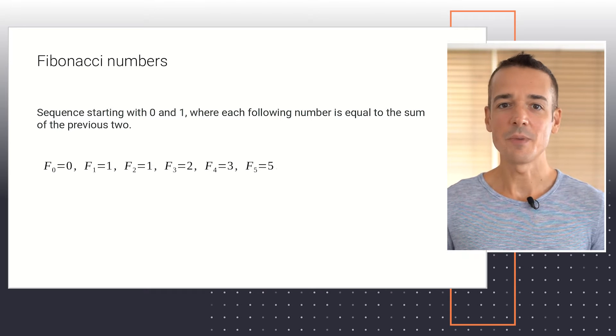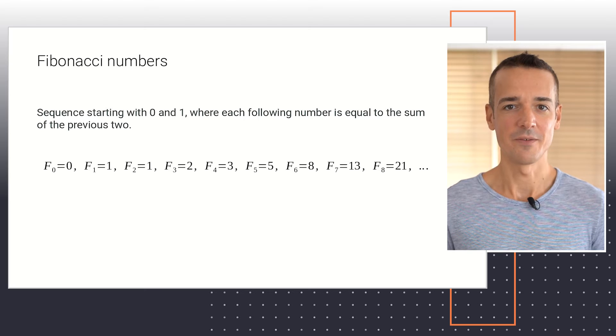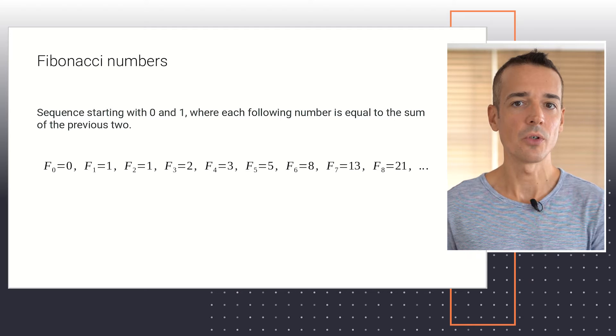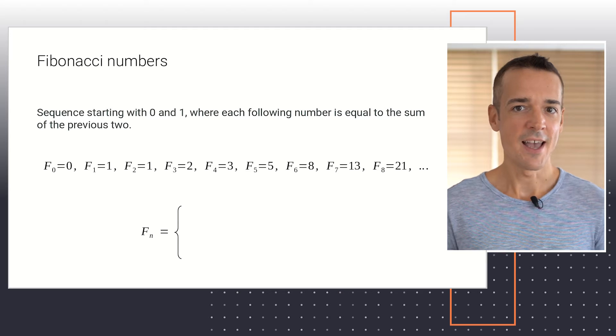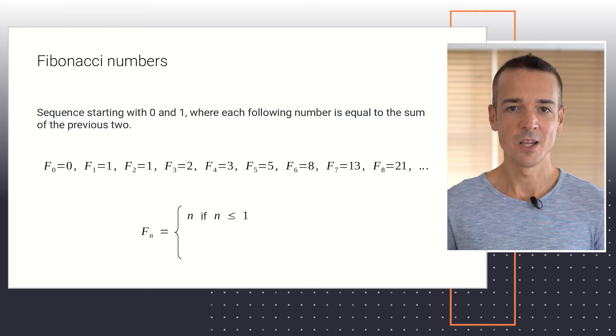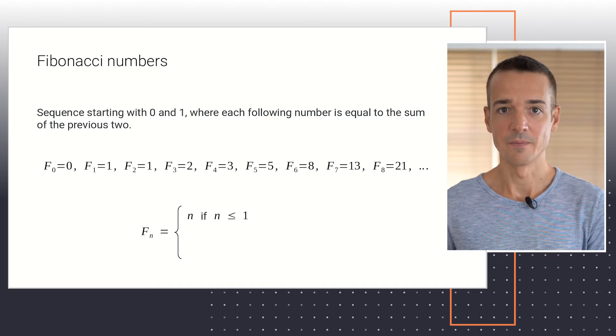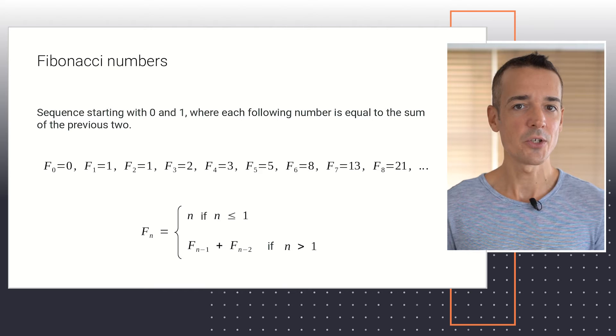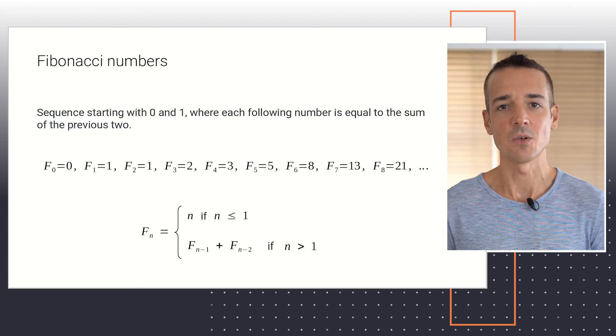The next values in this series would be 8, 13, 21, and so on. We can use the same mathematical notation I showed you for the factorial problem, in order to define the nth Fibonacci number as follows. Fn equals n itself, when n is less or equal to 1. Notice that this covers the cases for F0 being 0 and F1 being 1. And Fn equals Fn minus 1 plus Fn minus 2, if n is greater than 1. This covers all subsequent numbers in the sequence.